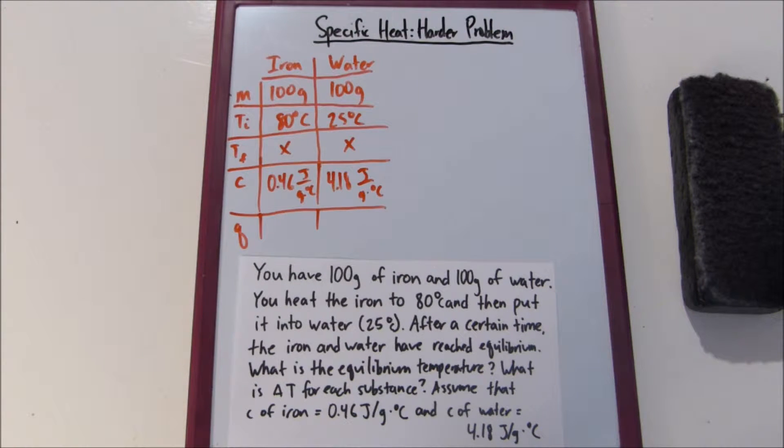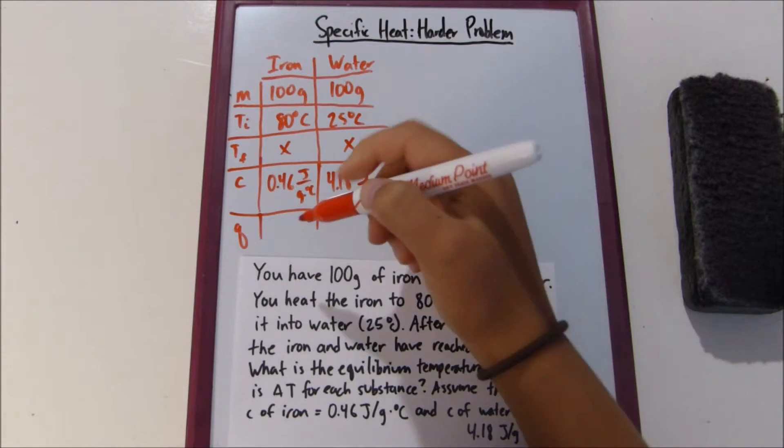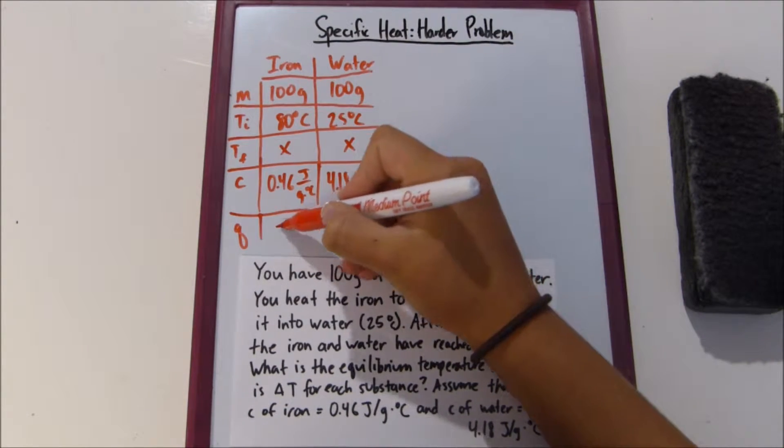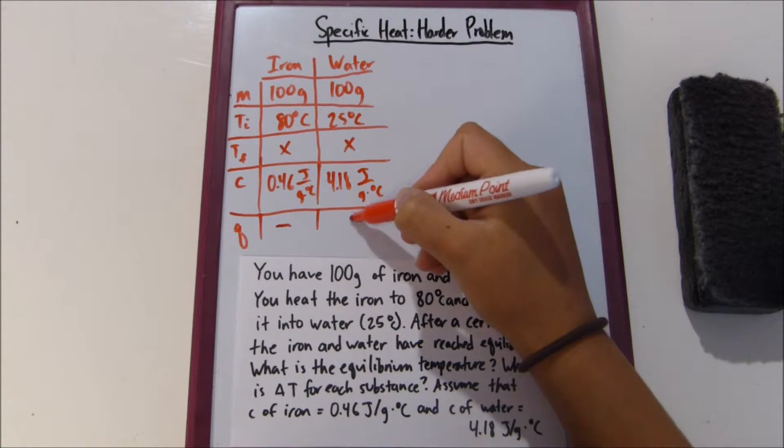That might have been a bad example. I don't know. Anyway, there's a transfer of heat. So we know that the transfer for the iron is going to be negative, and the transfer for the water is going to be positive.